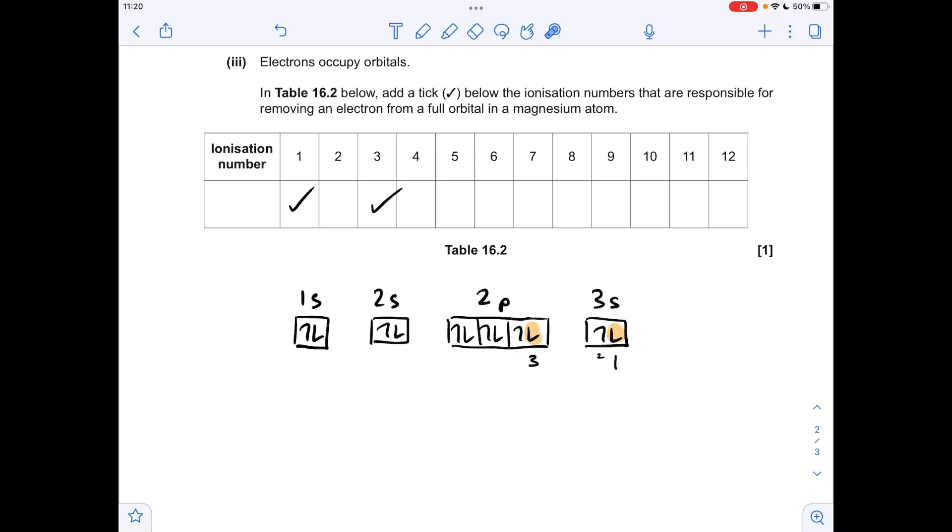So the next electron to come out is actually going to be one of these. So that's a full orbital. And then the next electron to come out will be this one here. So that's the fifth ionization energy. Again, that's from a full orbital.